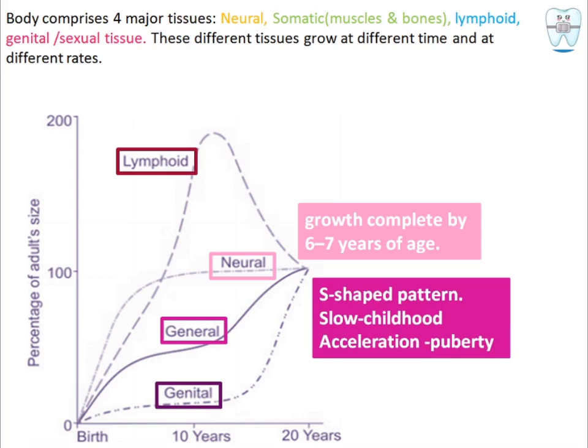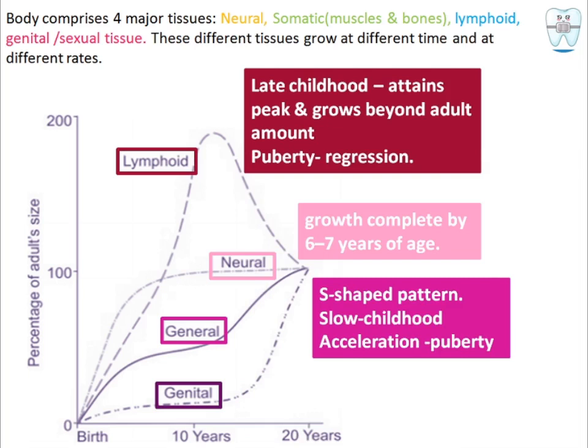Somatic tissues — muscles and bones — follow an S-shaped pattern: slow during childhood, relatively stagnant around 10 to 11 years of age, and then there is acceleration again at puberty.